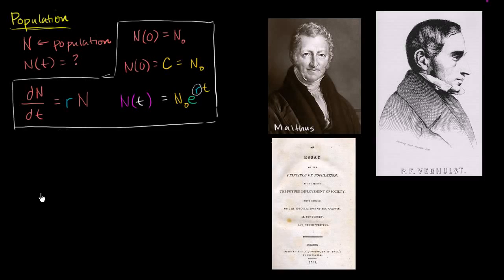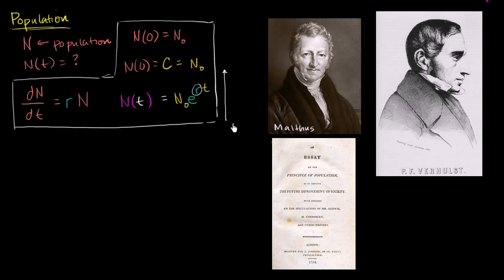In the last video, we took a stab at modeling population as a function of time, and we said maybe the rate of change of population with respect to time is going to be proportional to the population itself. That rate will increase as the population increases. When you actually try to solve this differential equation and find an N(t) that satisfies this, we found that an exponential would work. Visually, you start at a population of N₀, and as time increases, population increases exponentially.